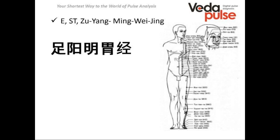In Chinese, the Stomach Channel sounds like 'dzu yan min dai zin'. The first part, 'dzu', means it is connected to feet, to our legs — it is located at our legs. 'Yan min' means the level of energy according to the scheme of six harmonies, which is called liuhe. 'Wei' means the stomach itself in Chinese, and 'zin' means a particular energy flow in the system. So it can be translated as the channel and the meridian.